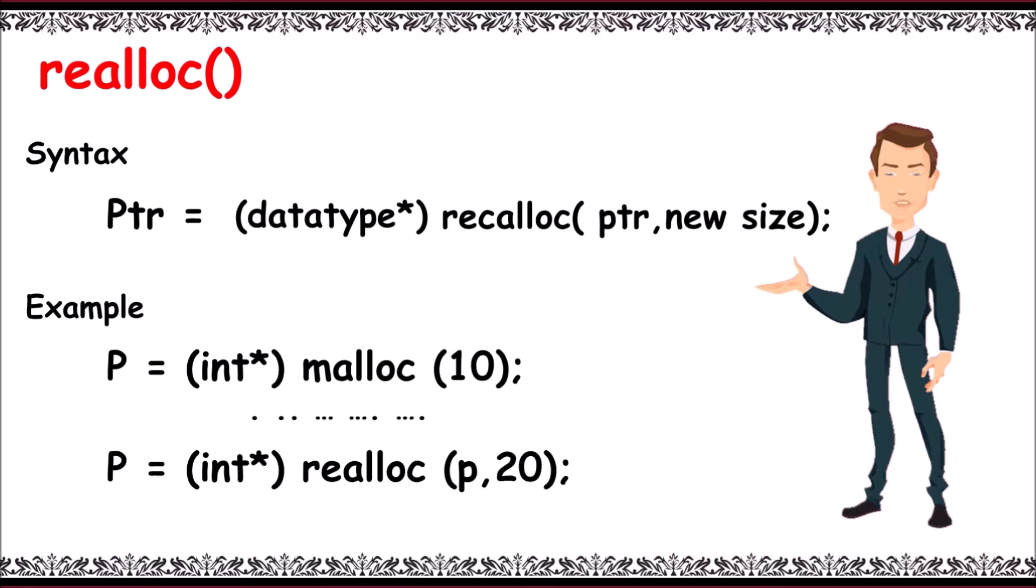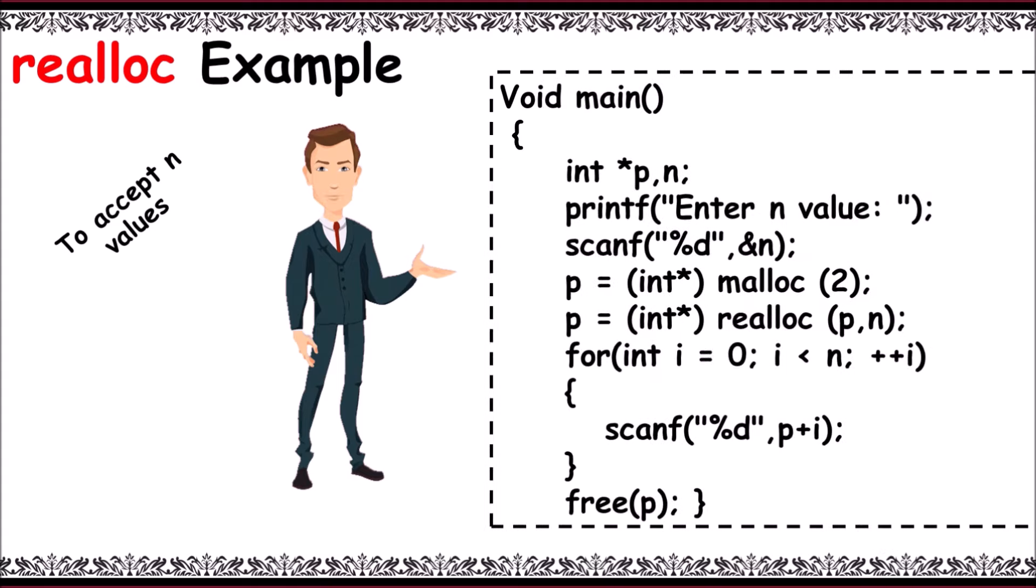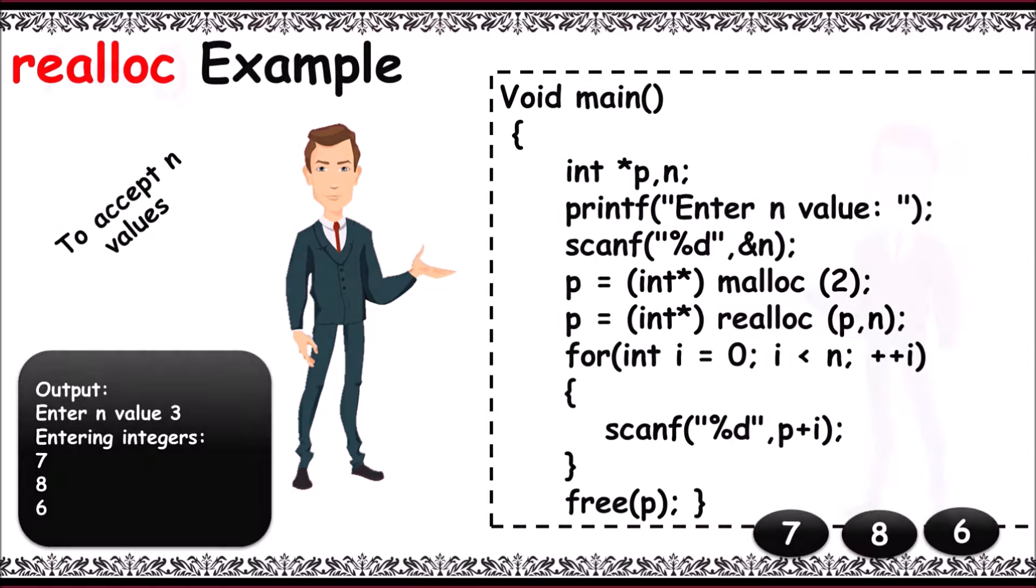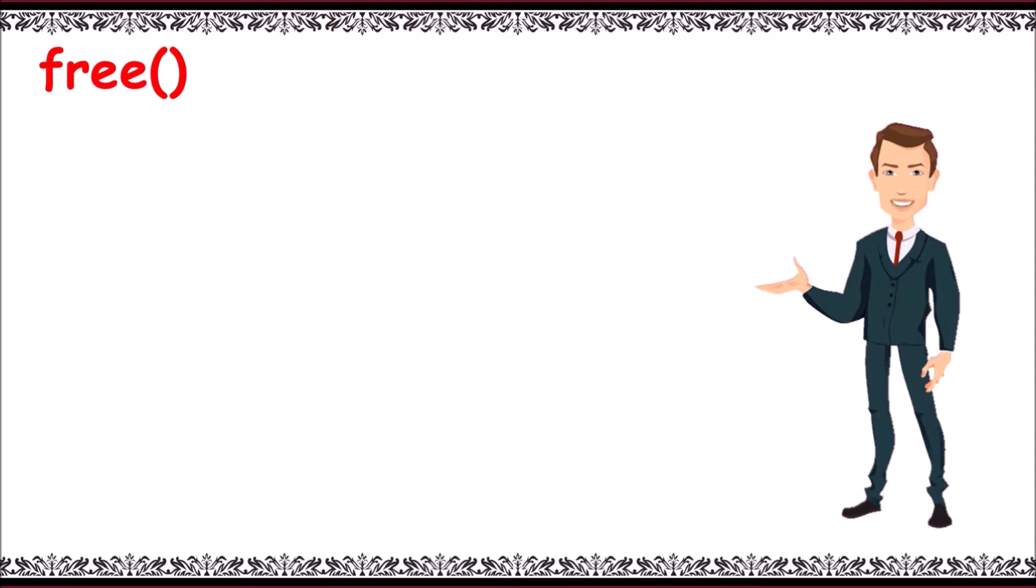In this example program, we allocate memory using malloc with two bytes. Later, we reallocate memory for p with n bytes. Next, free. It is used to deallocate the memory that is allocated to the pointer variable. For syntax, free of pointer. Example: the allocated memory using the malloc is freed now. It is deallocated.